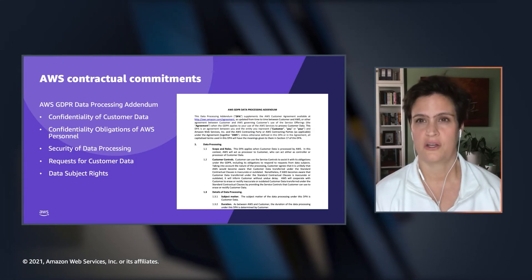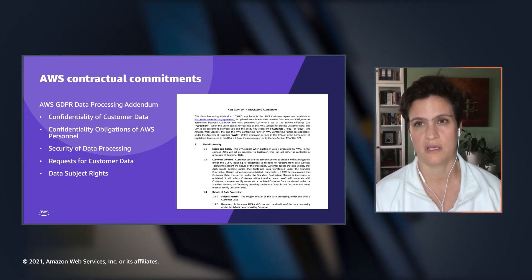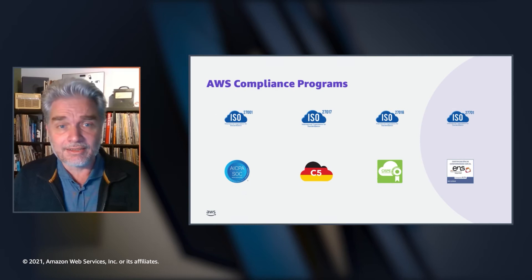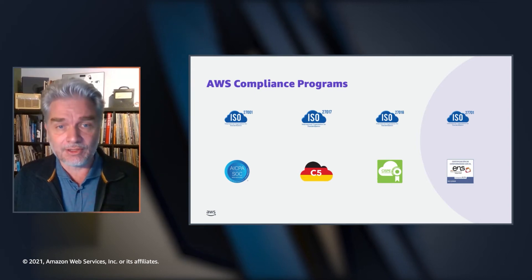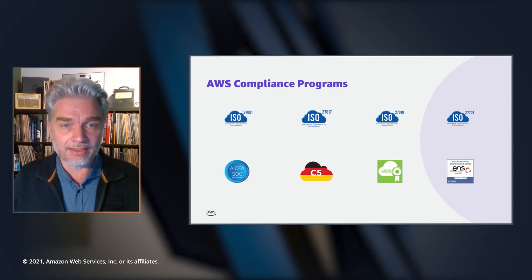I'm now going to hand over to Hans to look at the organizational and technical measures, and also the characteristics I highlighted before — the prevent, detect, and protect. Thank you, Esther. I first wanted to highlight the AWS compliance programs, which help customers understand the robust measures and controls in place at AWS to maintain security and compliance of the cloud.